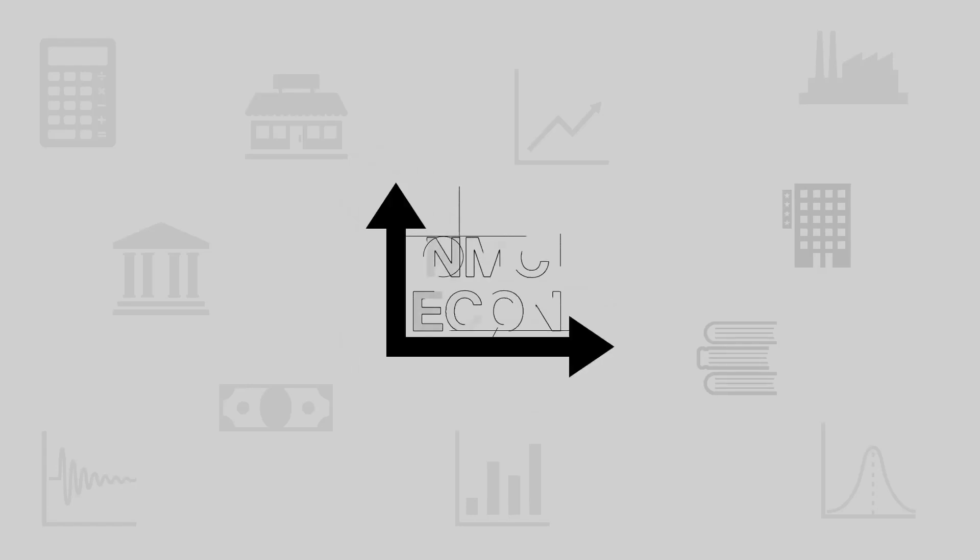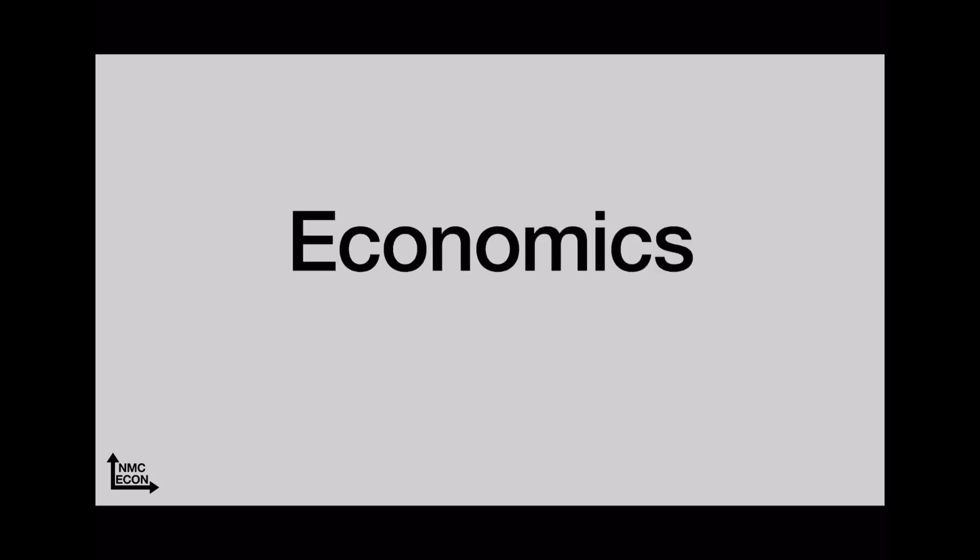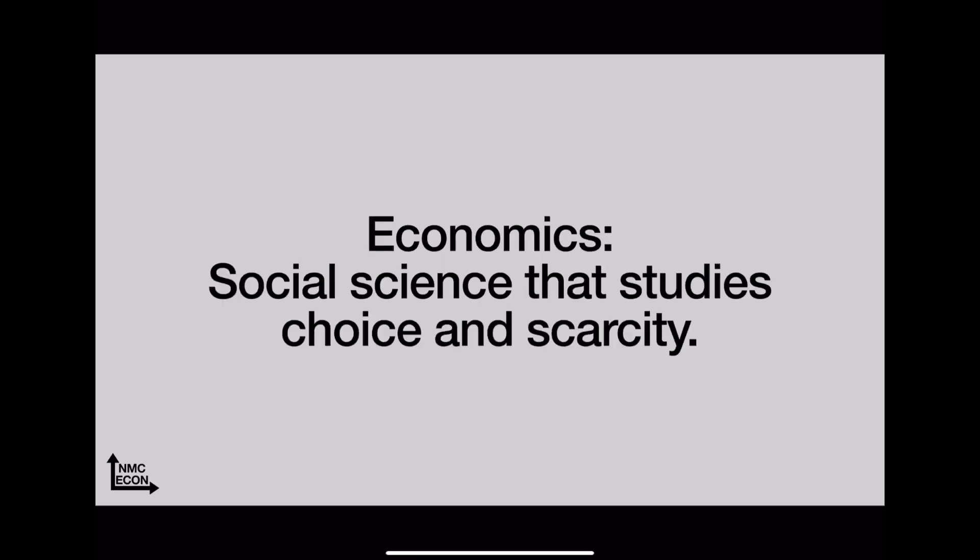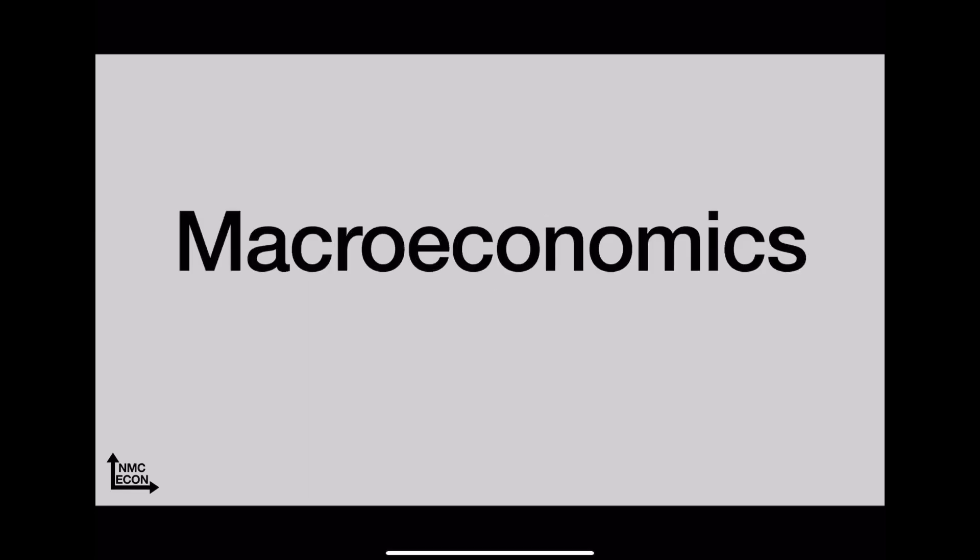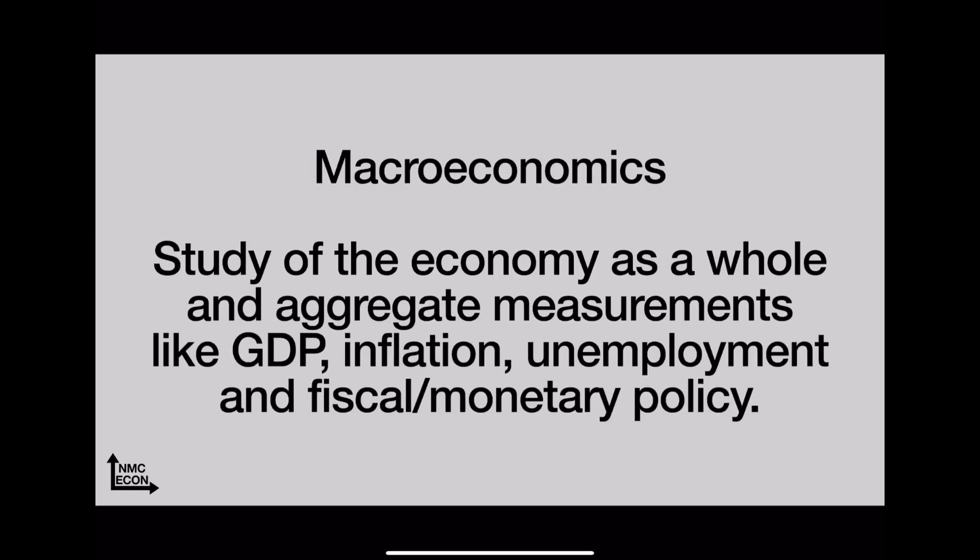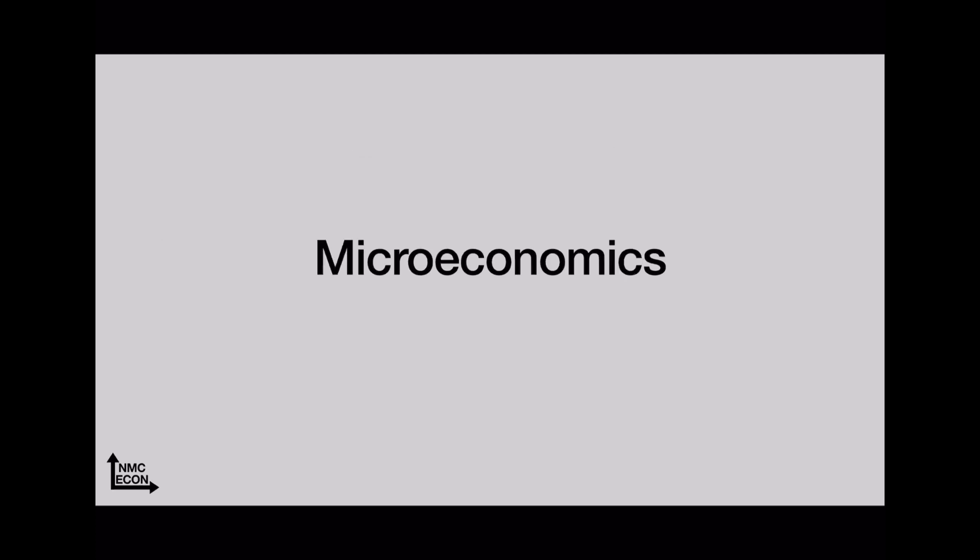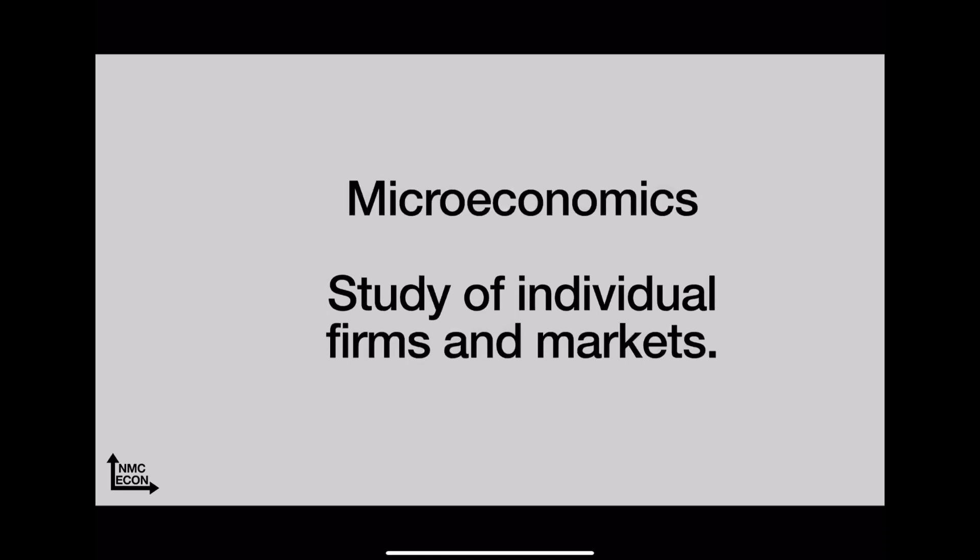Economics is a social science that studies choice and scarcity. Macroeconomics is the study of the economy as a whole, looking at aggregate measurements like GDP, inflation, unemployment, and fiscal and monetary policy. It's kind of zoomed out. Microeconomics is zoomed in—we're studying individual firms and markets and behaviors, things like a monopoly or one farmer.